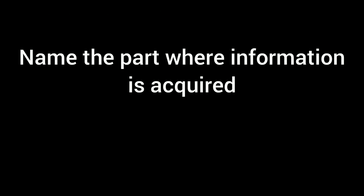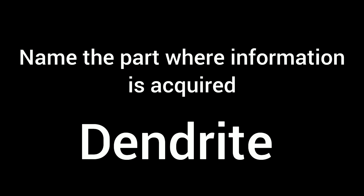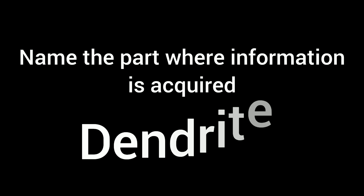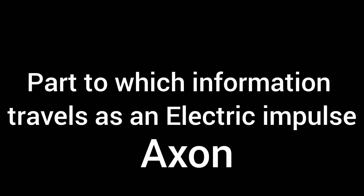Now the question arises: name the part where information is acquired. The answer is dendrite. Now, the part through which information travels as an electric impulse — the answer is axon.